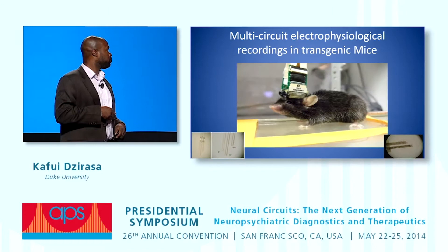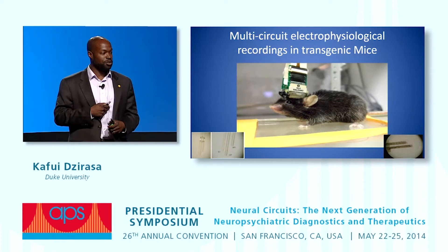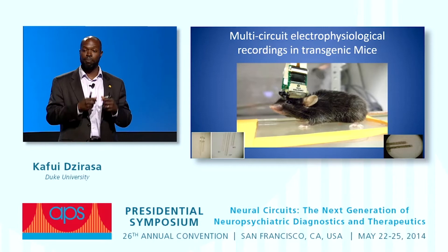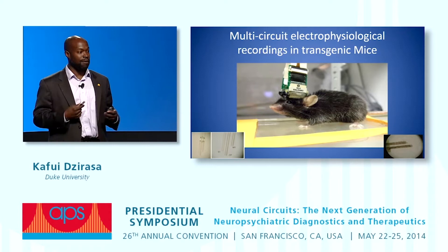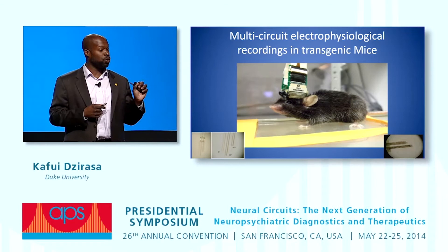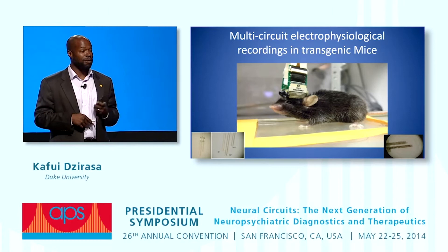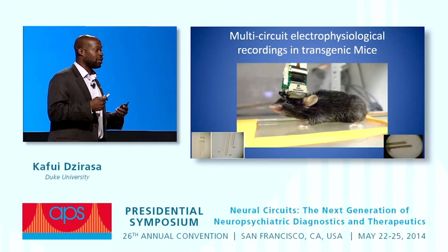The work we do in the lab is based on implanting electrodes into the brains of mice. Each electrode is the size of a piece of hair, about 30 microns. We implant arrays — multiple arrays and bundles — into the brains of animals, and we can target multiple brain areas simultaneously during surgery. When the animals recover, we record their brain activity while they're awake, behaving, and performing different tasks. I'll spend the majority of time today talking about inbred mice, because I think it teaches a lot about the real challenges that lay ahead of us.